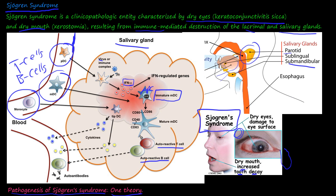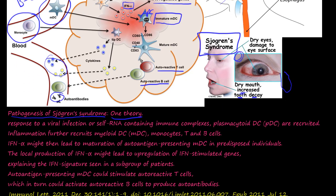The B cells then secrete antibodies, and the T cells differentiate and secrete cytokines. These autoantibodies and autoreactive T cells destroy the parotid gland and its ducts — the ducts that drain fluid into the mouth — as well as the lacrimal gland. Local production of IFN-alpha also leads to upregulation of IFN-regulated genes.